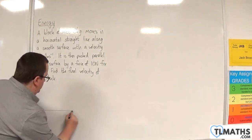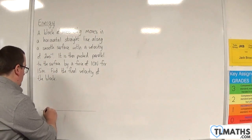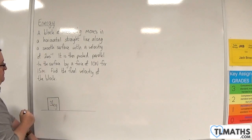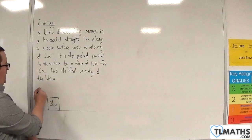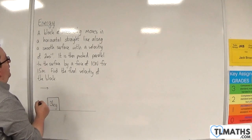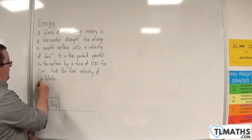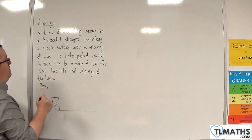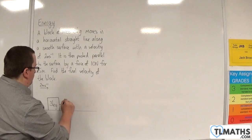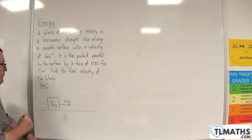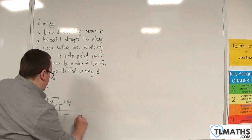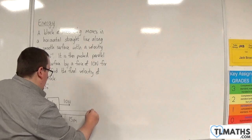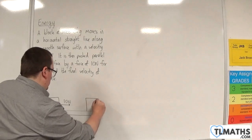So let's draw a diagram. So here is my surface. Here is my block. It has a mass of 3 kilos, and it is initially travelling with a speed of 2 metres per second. It is then pushed parallel to the surface by a force of 10 newtons for 15 metres. So it ends up over here.